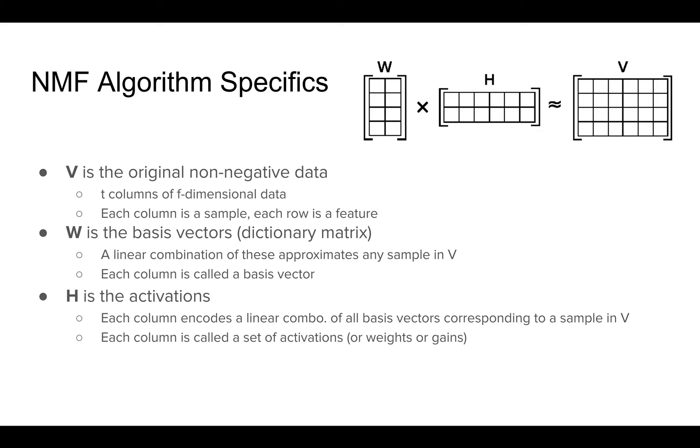And it's called the activations. Each column in these activations matrix encodes a linear combination of all basis vectors that corresponds to a sample in V. So they're kind of like the instructions, you could say. An analogy would be maybe the basis vectors are like building blocks or Legos. And then the activations are like your instruction manual or like the instructions to build this Lego set.